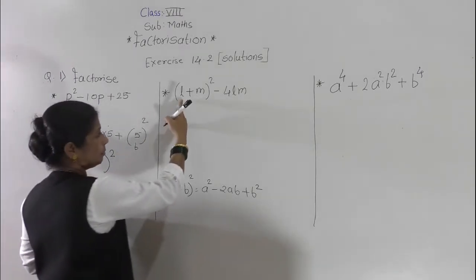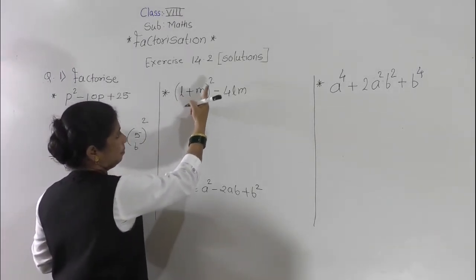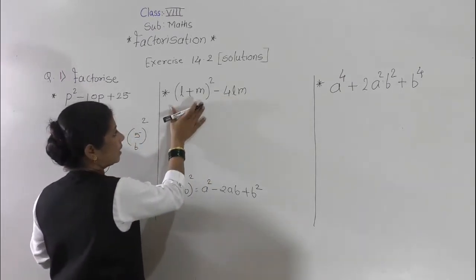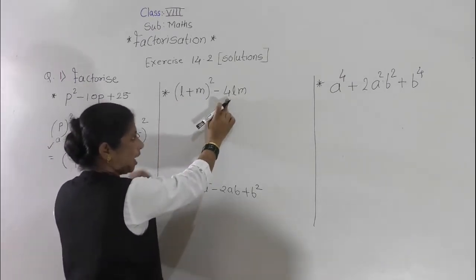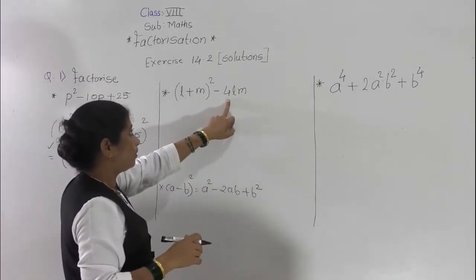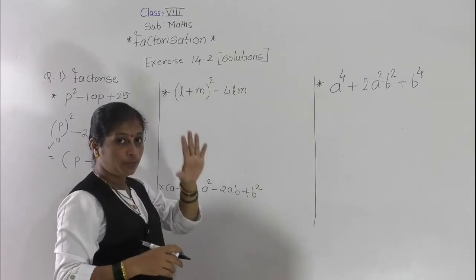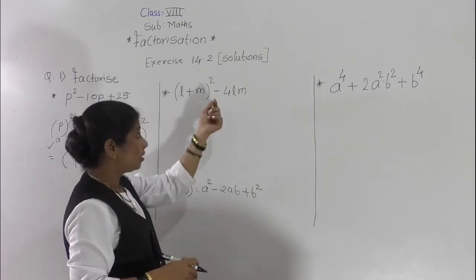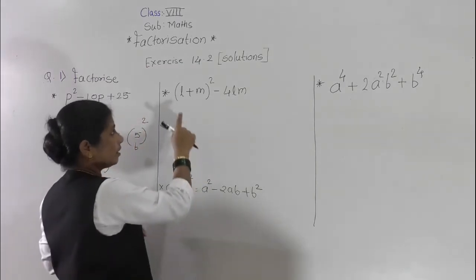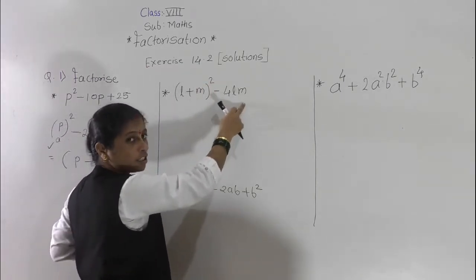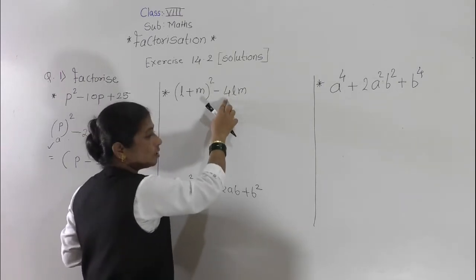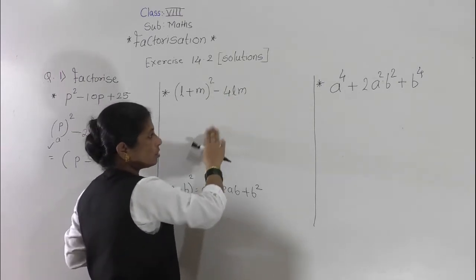Now, next example: (l plus m) bracket squared minus 4lm. In this, can we use the a squared minus b squared identity? No, because l and m are not perfect squares. 4 is a perfect square, but these variables are not squares. So first we will expand this bracket by using the (a plus b) bracket squared identity.